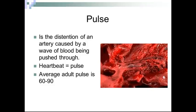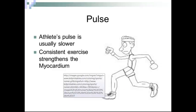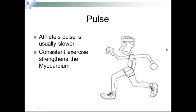The pulse is the distension of an artery caused by a wave of blood being pushed through. One heartbeat equals one pulse. The average adult pulse is 60 to 90 beats per minute — preferably 60 to 80, as that is less stress on the heart.